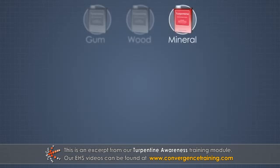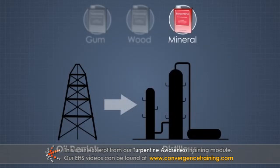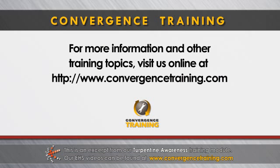Mineral turpentine is one of several petroleum distillates that are sometimes used as solvents in place of turpentine, though they are very different chemically. Mineral turpentine